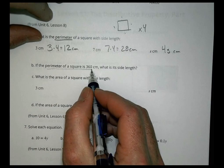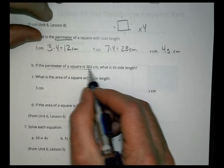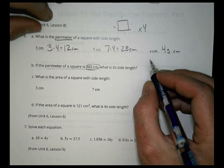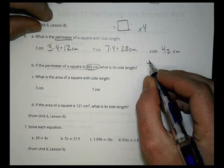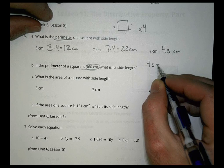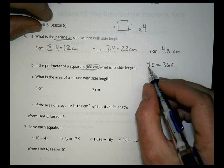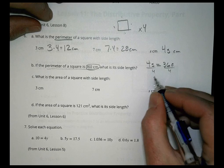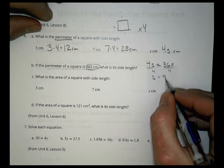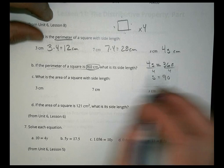If the perimeter of a square is 360, what's the side length? We knew that 4 times the side length gives me the perimeter. In this case, we know the perimeter is 360. So we divide both sides by 4, and s equals 90.